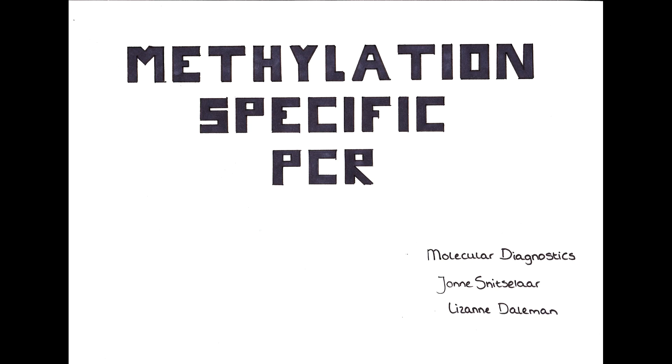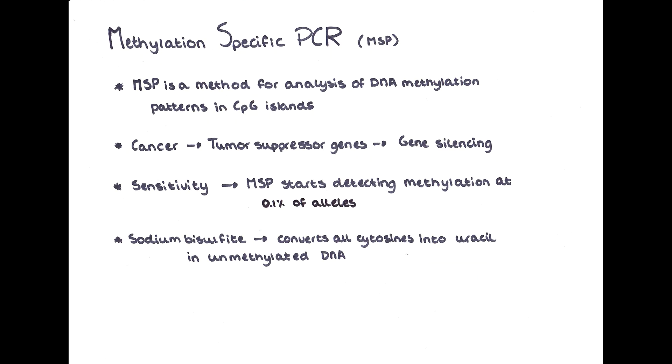This web lecture is about methylation-specific PCR. Methylation-specific PCR, also known as MSP, is a method used to scan DNA for alterations made to the DNA via CpG islands. A CpG island is a cytosine followed by a guanine.